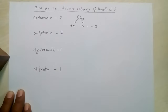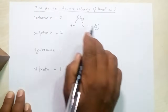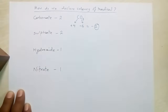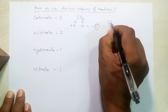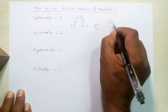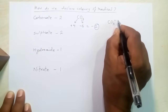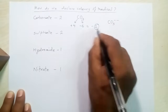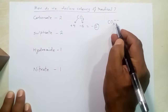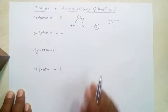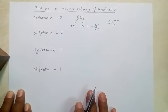So the valency of carbonate is 2. The minus sign indicates that carbonate is an electronegative radical. When it forms an ion, it is represented as CO₃²⁻, meaning it has 2 excess electrons.